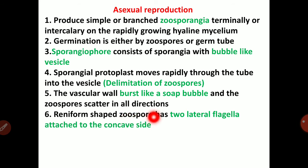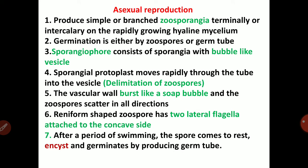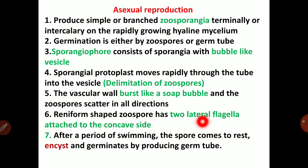Zoospores are reniform-shaped with two lateral flagella attached to the concave side. After a period of swimming, the spore comes to rest, encysts, and germinates by producing a germ tube. Encystment means it will produce a membranous sac-like structure around the zoospore. Zoosporangia produce a sporangium which contains a bubble-like vesicle, and the protoplasmic contents are converted into zoospores.